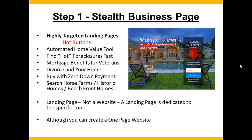What about divorce and your home? Free report: the 10 deadly mistakes you can make when buying a home in this area and how to avoid them. How to buy with zero down payment. Or something very specific and different from Zillow — search every horse farm for sale in the area, every historic home, every beachfront or waterfront or lakefront home. A very specific targeted page that leads them back to your Stealth Business Page. That's a landing page, not a full website, although you can create a one-page website.